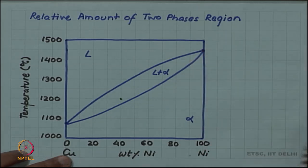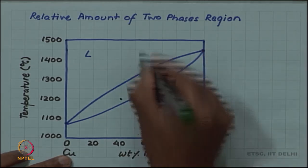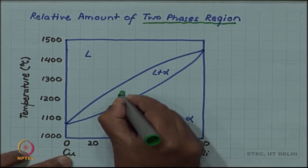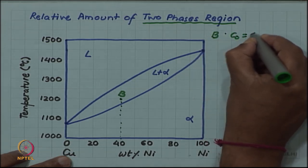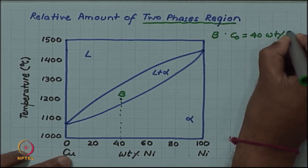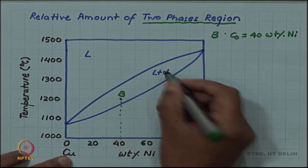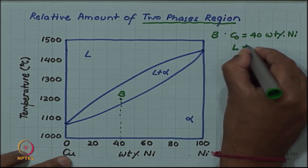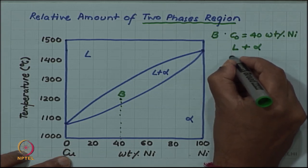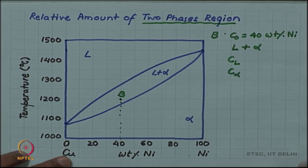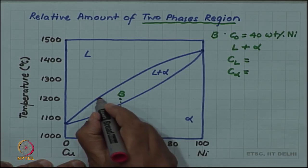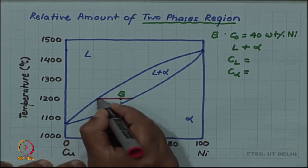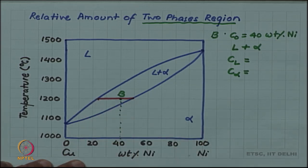The question becomes interesting if we take a point in the two-phase region. Let us consider point B in the diagram, where C₀ equals 40 weight percent nickel. Since it is in the two-phase region, both liquid and alpha are present. The phase compositions C_L and C_alpha are not the same as the alloy composition — they are given by what is called the tie line rule, where we draw a horizontal isotherm running from one boundary to the other boundary defining the two-phase field.